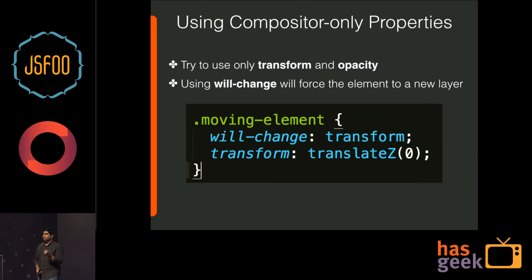A recently introduced CSS property called will-change, when added to an element, creates a new layer for that element. The rest of the page stays in the layer below, and when animations occur, only that particular element is painted since it's the only one on the new layer. The old elements in the previous layer are not touched, reducing the number of pixels that need to be repainted and giving you more leeway in the 16ms frame budget.